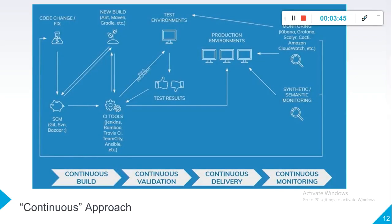What is the continuous approach? In DevOps we have five phases: continuous planning, continuous integration, continuous validation — which is basically continuous testing — then continuous delivery, and continuous monitoring. As testers, we should have knowledge about all of these continuous phases.